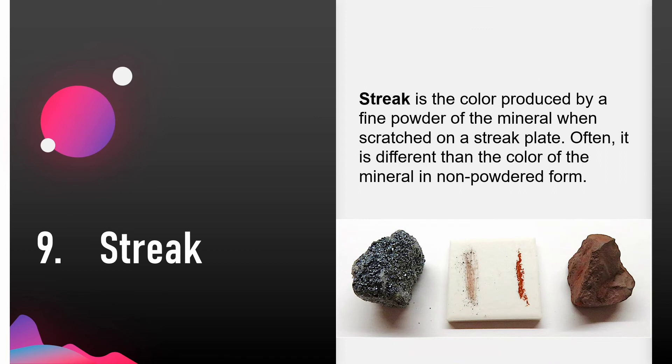Streak is the colour produced by a fine powder of the mineral when scratched on a streak plate. Often it is different from the colour of the mineral in non-powdered form. Streak is usually more useful for identification than the colour of the whole mineral sample. Rubbing the mineral on a streak plate will produce a streak. A streak plate can be made from the unglazed back side of a white porcelain tile. Note that some minerals won't streak because they are harder than the streak plate.